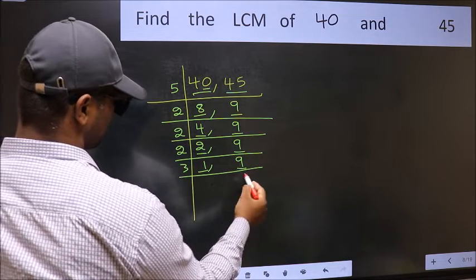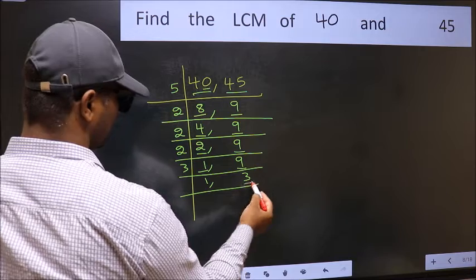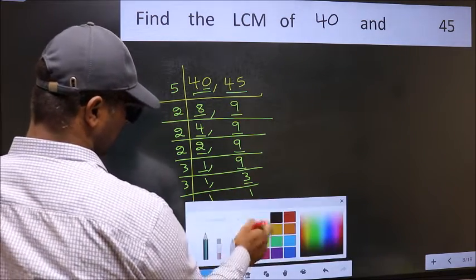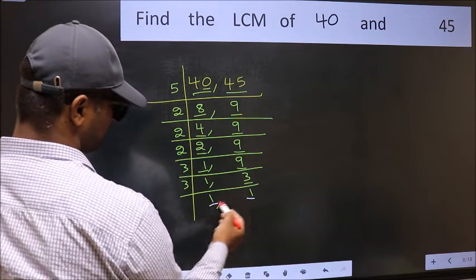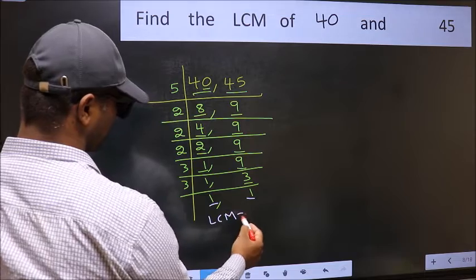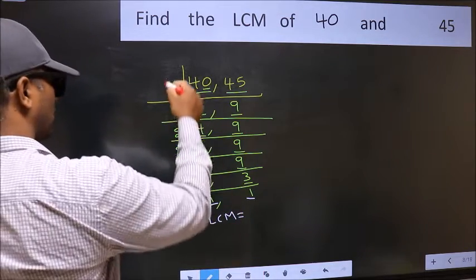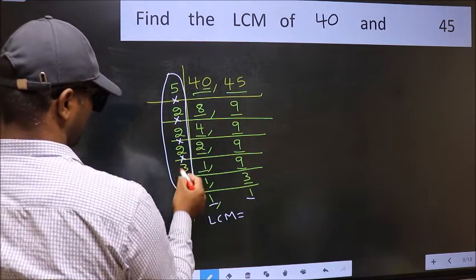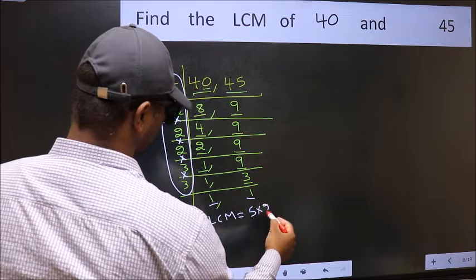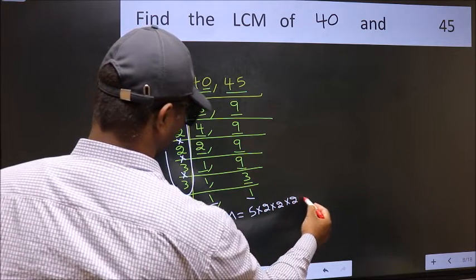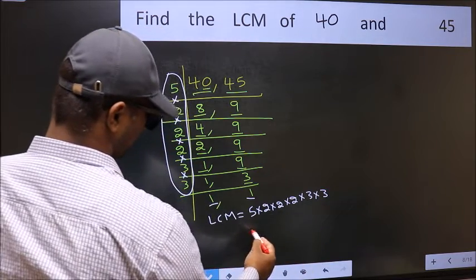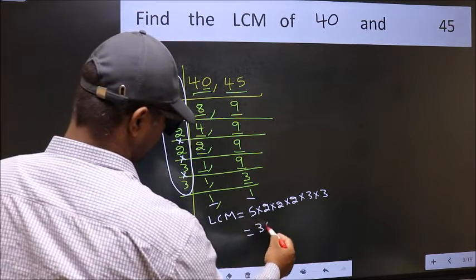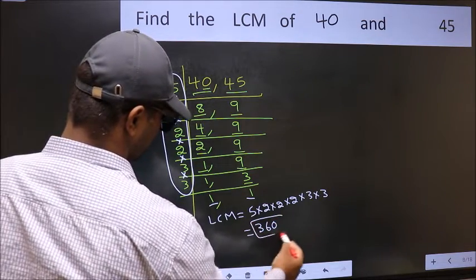9 is 3 times 3. Now here we have 3. 3 is a prime number, so 3 times 1 is 3. We got 1 in both places. So our LCM is the product of these numbers: 5 into 2 into 2 into 2 into 3 into 3. When we multiply these numbers, we get 360 as our LCM.